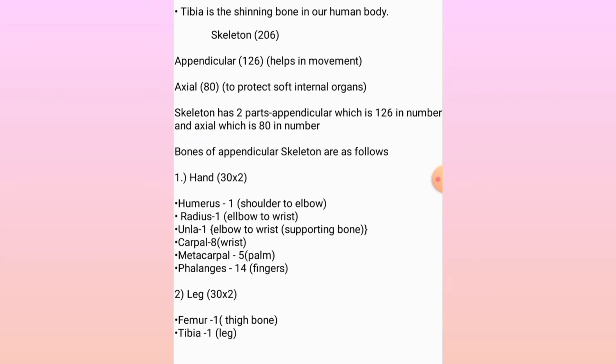The skeleton consists of 206 bones and is divided into two parts: appendicular and axial. The appendicular skeleton consists of 126 bones and helps in movement. The axial skeleton consists of 80 bones and protects soft and internal organs.